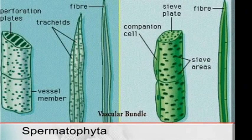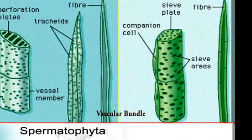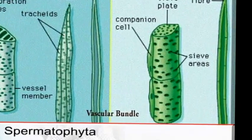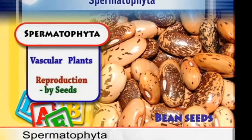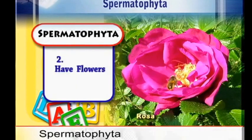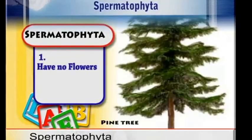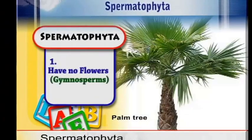Remember, they are vascular plants — they have both the xylem and the phloem. And secondly, they reproduce themselves by use of seeds. But the Spermatophytes are further subdivided into two groups: those organisms which do not possess flowers, and those organisms that possess flowers. Organisms that do not possess flowers we group into a group called Gymnosperms.